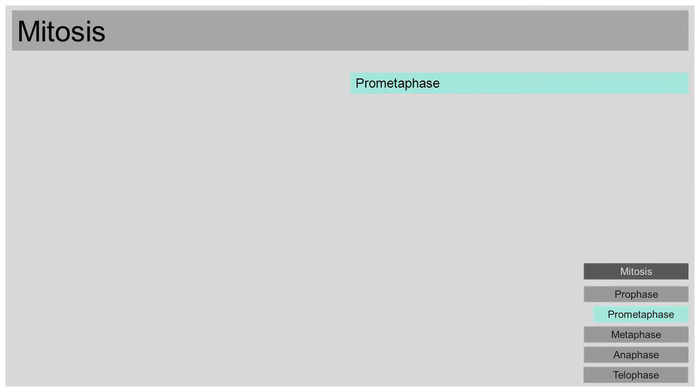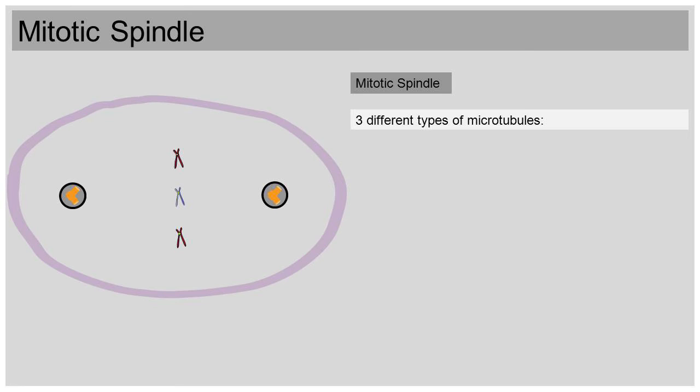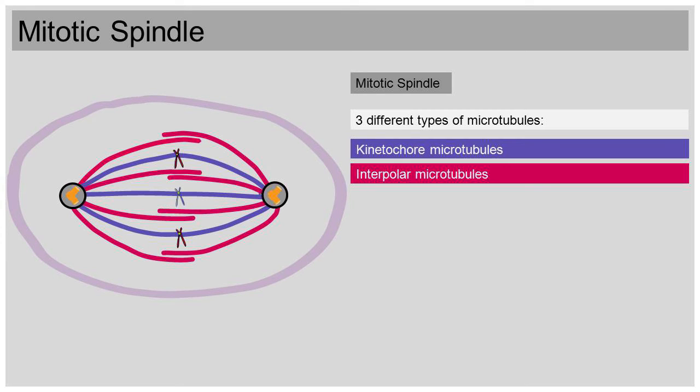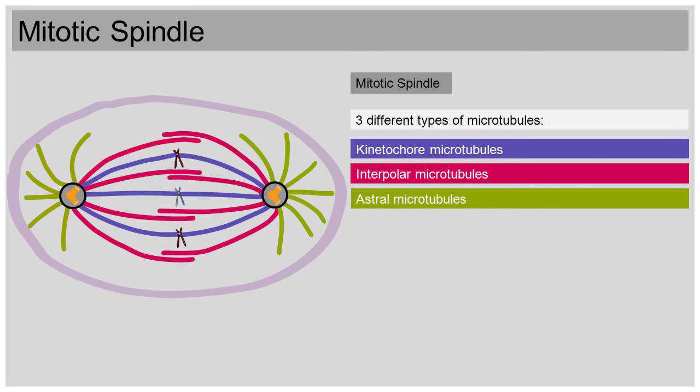To truly understand mitosis, it's important to differentiate between three types of microtubules. All microtubules have their starting point in the centrioles of the centrosomes. The kinetochore microtubules bind to the centromeres of the chromosomes. The interpolar microtubules of the two centrosomes meet in the middle of the cell and overlap there. The astral microtubules bind to the inner cell membrane and thus position the mitotic spindle inside the cell.